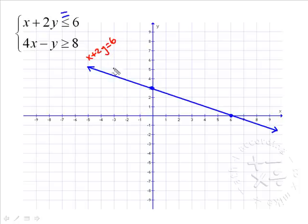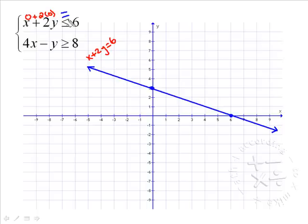Now we have to figure out what side to shade on. To do that, we'll pick a test point. The most common test point is the origin, because it's so easy to use — the origin has coordinates 0, 0. So we'll put 0 in for x and 0 in for y. Is 0 plus 2 times 0 less than or equal to 6? Yes, it is. Since 0, 0 made it true, and since 0, 0 is below the line, we're going to shade below this line.